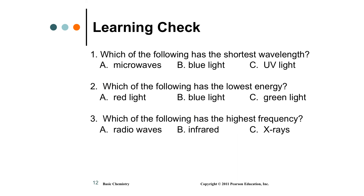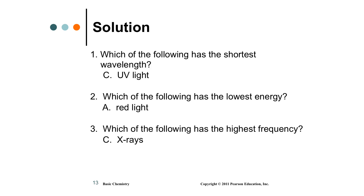Final learning check: which has the shortest wavelength — microwaves, blue light, or ultraviolet light? Which has the lowest energy — red, blue, or green? Which has the highest frequency — radio, infrared, or X-rays? Answers: ultraviolet has the shortest wavelength of those three; red has the lowest energy among the colors; and X-rays have the highest frequency of those options. Please take notes on this and submit that into the assignment.